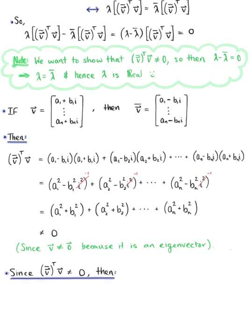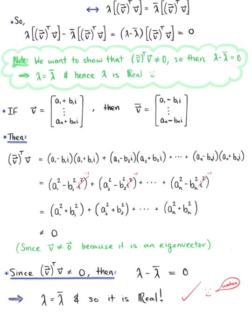So since the dot product of v-bar-transpose with v cannot be equal to zero, then by default lambda minus lambda-bar must equal zero, which implies that lambda equals lambda-bar, and therefore lambda is real — which is exactly what we wanted to show. We have verified officially that if matrix A is a real symmetric matrix, then the eigenvalues of matrix A must be real, which completes our proof.